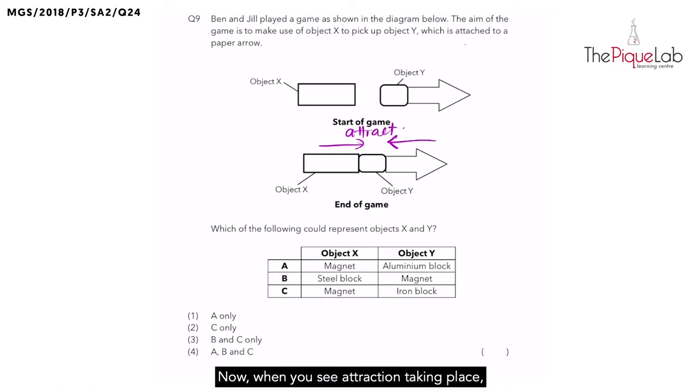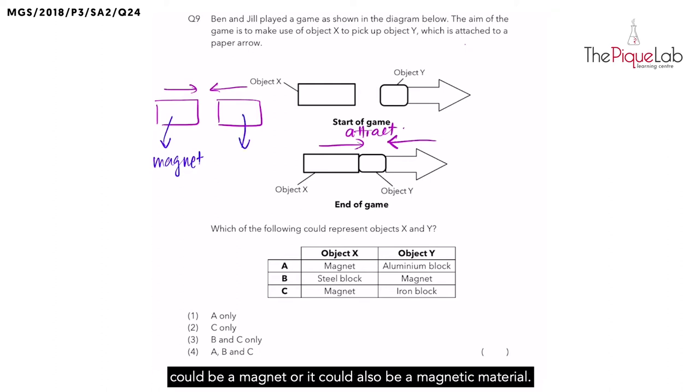Now, when you see attraction taking place, for example, if I have two objects over here and I see that they moved towards each other, that means they have attracted. In order for that to happen, one of the objects definitely has to be a magnet. And how about the other object? The other object could be a magnet or it could also be a magnetic material.